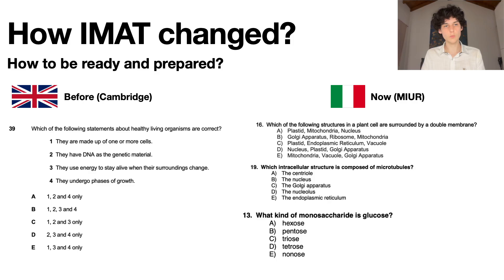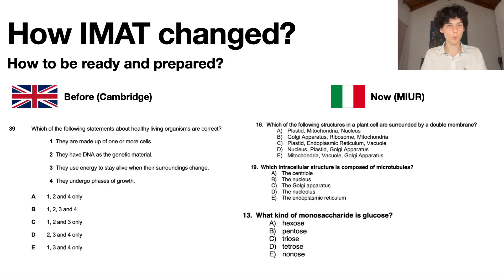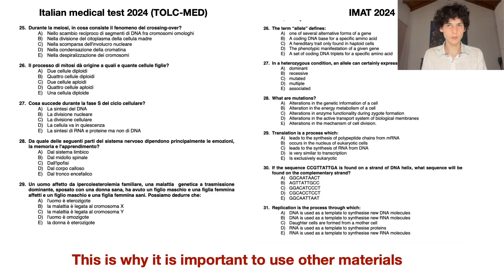Here I'd like to compare two versions of exams to show how different they are. Before 2022, IMAT exams were designed by Cambridge — the most popular question type gave you multiple statements to identify as right or wrong. After 2022, things changed: the IMAT exam is now designed by MUR, the Italian Ministry of Education, and the style and overall look of questions changed dramatically. On the left is TOLC-MED 2024 — the Italian medical test — and on the right is IMAT 2024. You can see the question style is literally the same.